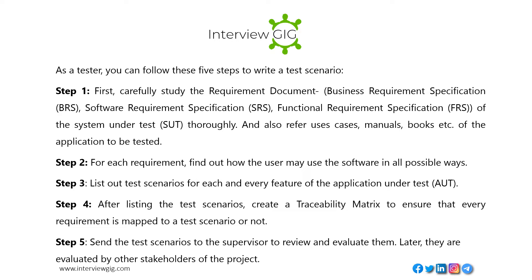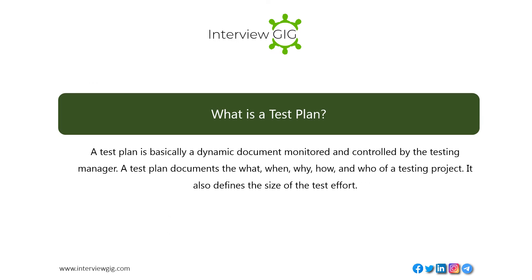As a tester, you can follow these five steps to write a test scenario. Step 1: Carefully study the requirement document — BRS (Business Requirement Specification), SRS (Software Requirement Specification), FRS (Functional Requirement Specification) — of the system under test (SUT), and also refer to user manuals and other documentation. Step 2: For each requirement, find out how the user may use the software in all possible ways. Step 3: List out test scenarios for each and every feature of the application under test (AUT). Step 4: Create a traceability matrix to ensure every requirement is mapped to a test scenario. Step 5: Send the test scenarios to the supervisor for review and evaluation by project stakeholders.